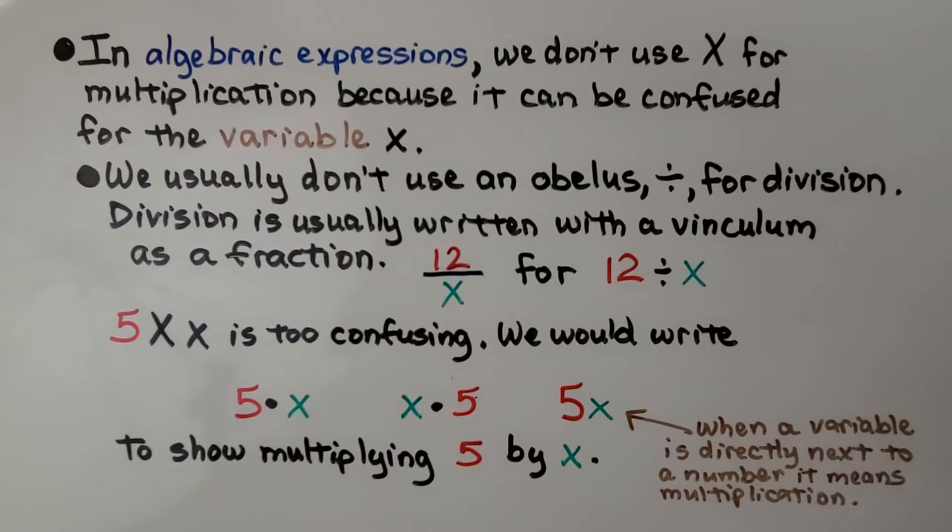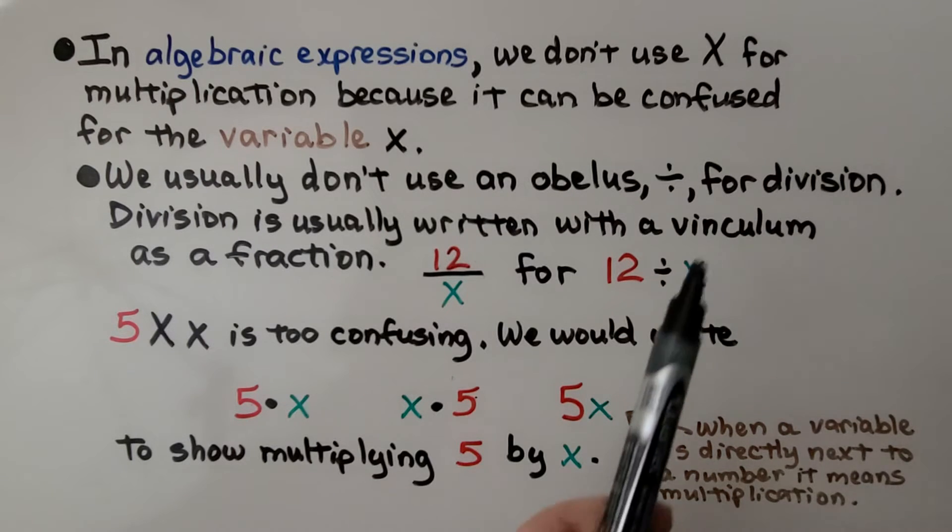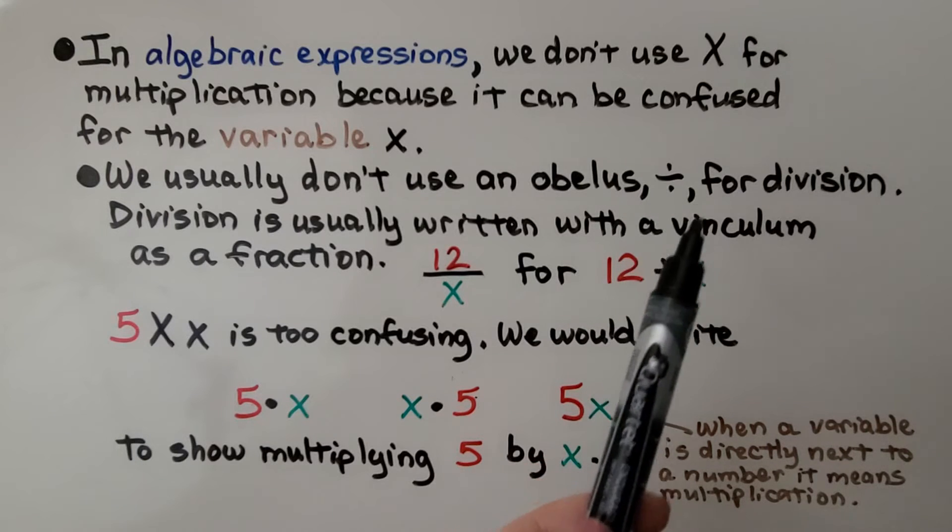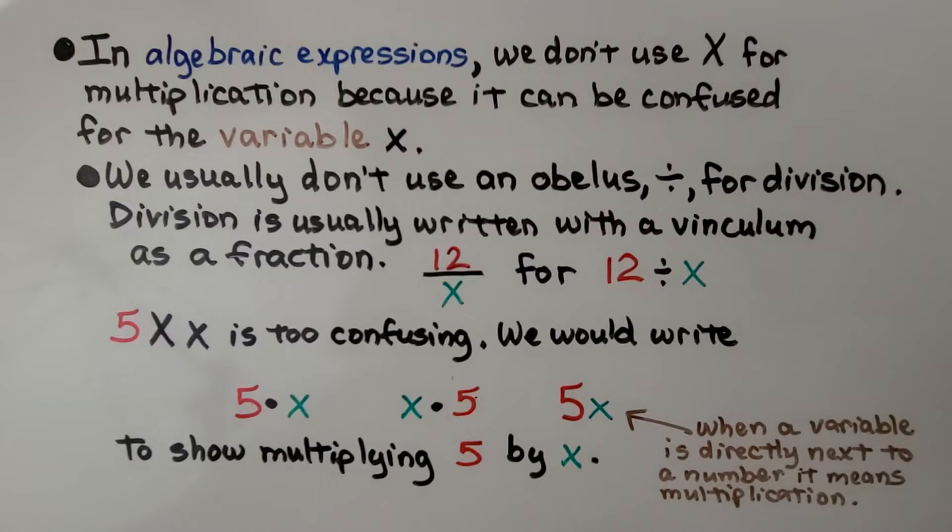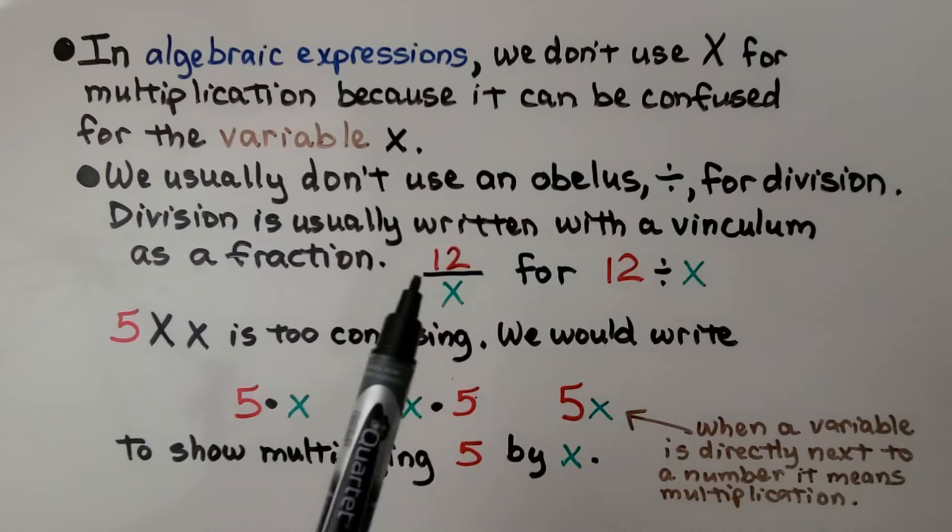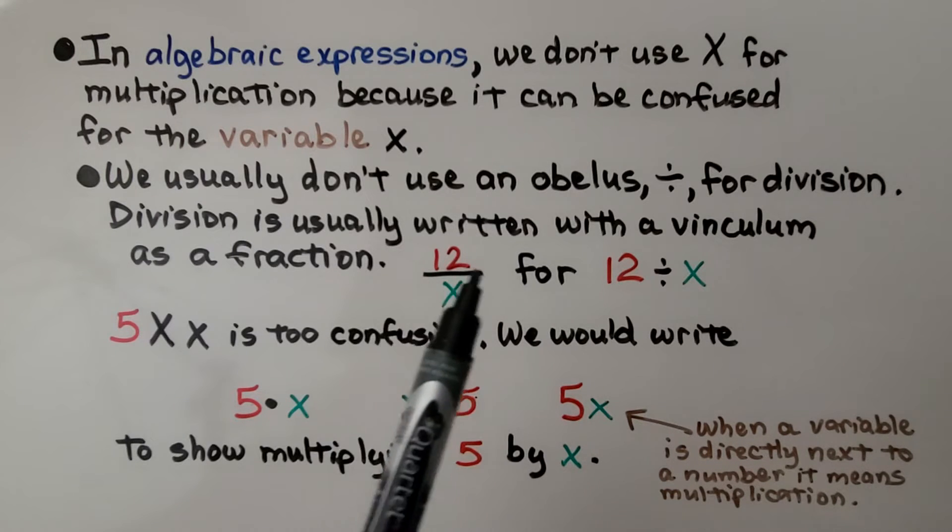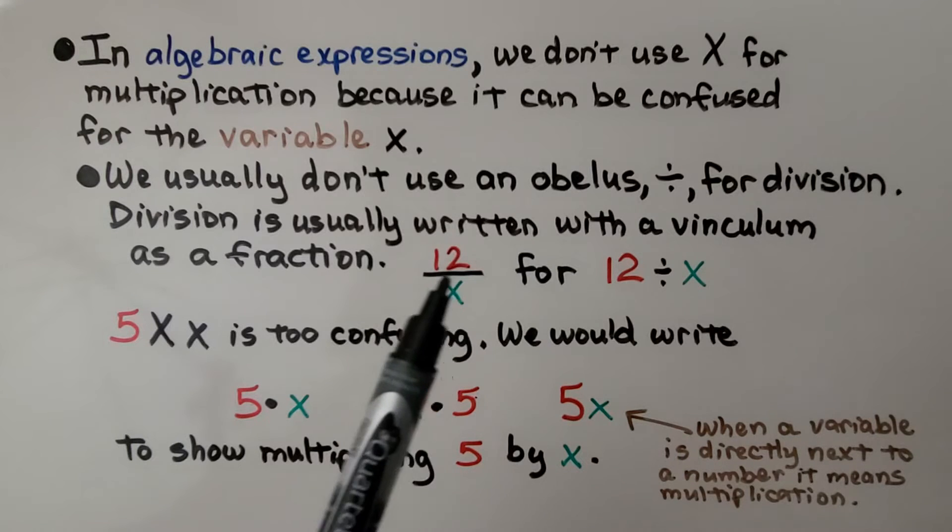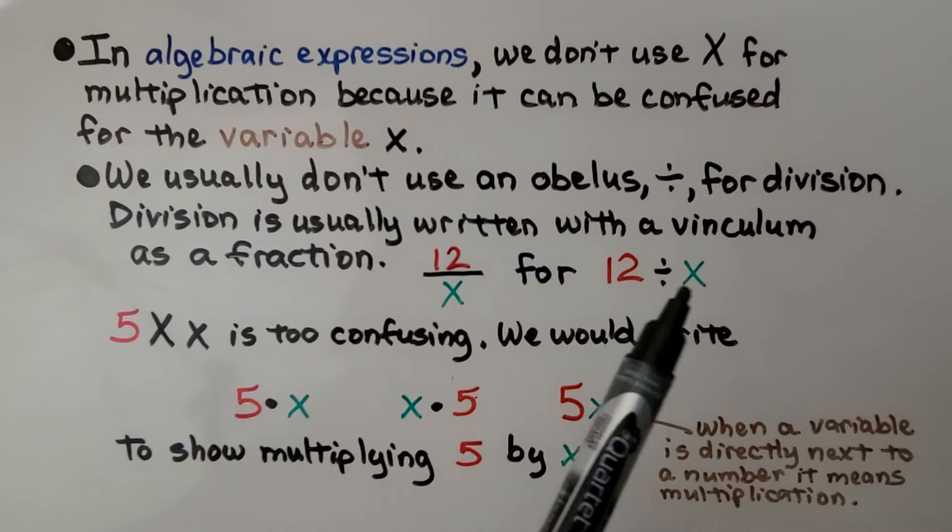When we were younger we used a big x to show multiplication. Well, in algebraic expressions we don't use that big x for multiplication because it could be confused for the variable x. We usually don't use an obelisk. That's the division symbol for division. Division is usually written with a vinculum. That's the fraction bar as a fraction. So 12 over x with the fraction bar is 12 divided by x.